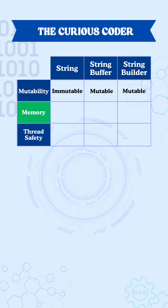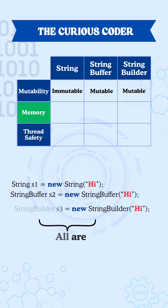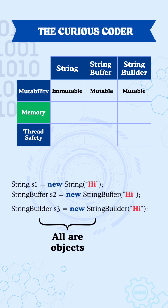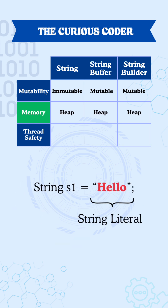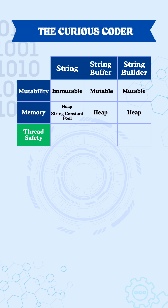Second point: memory. All 3 — String, StringBuffer, and StringBuilder — are objects, so they live in the heap memory. But String has one special case: if it's created as a literal, Java stores it in a special area called the String Constant Pool, which is designed only for strings.